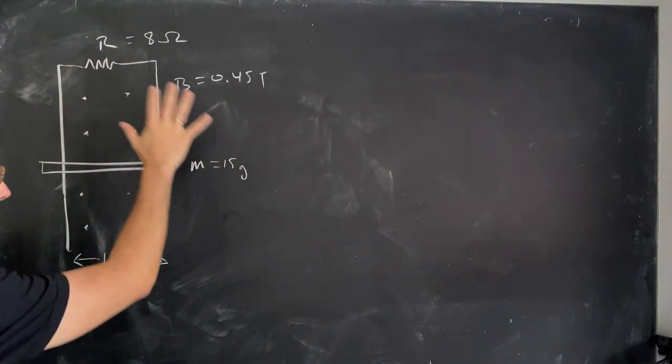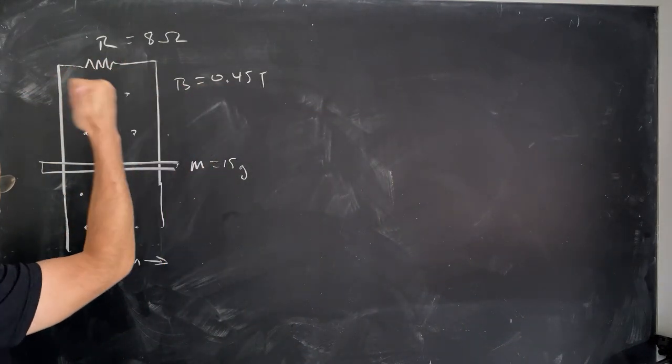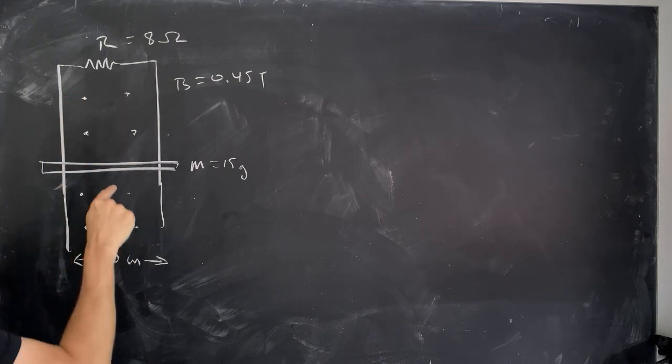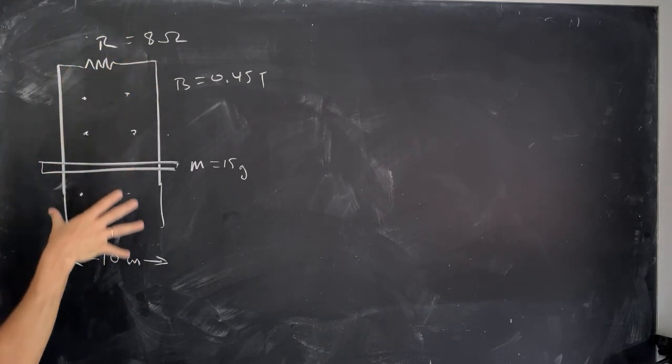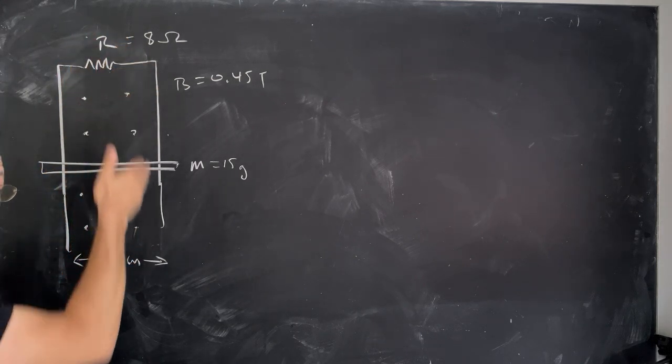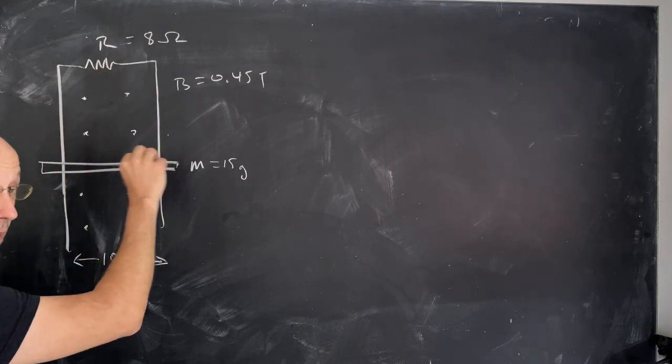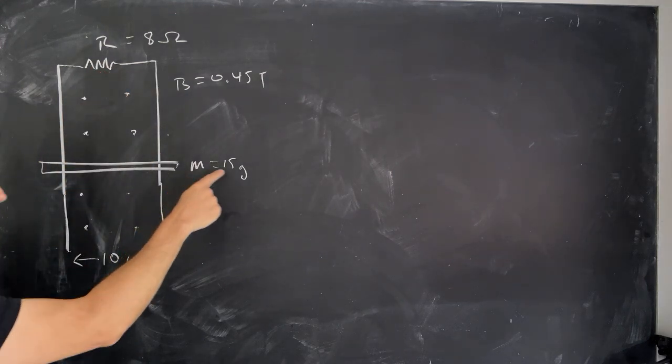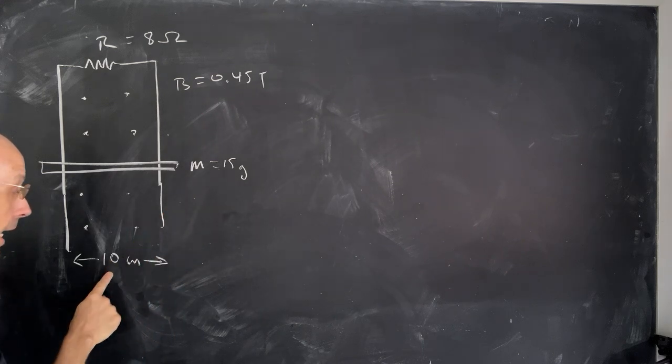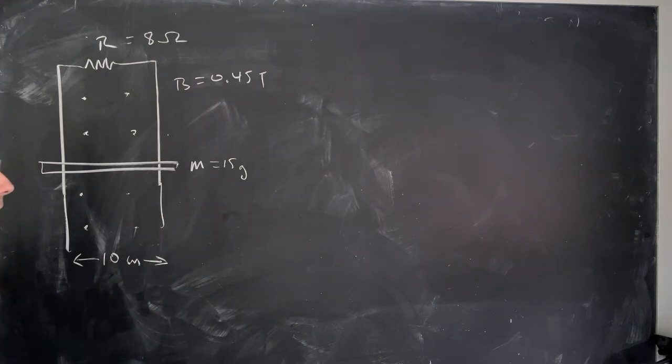So I have a strong magnetic field 0.45 Tesla coming out of the board. You can tell that by the dots. And in this is this apparatus where these two vertical rods with an 8 ohm resistor between them and a metal bar that can slide up and down. The bar has a mass of 15 grams and the width of the rods is 10 centimeters.